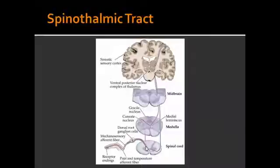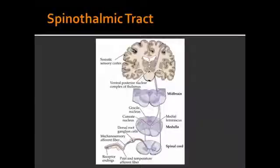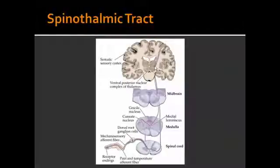Then the neurons decussate at the anterior white commissure, switching sides and ascending contralaterally. This is the second order neuron — everything after the first synapse. Then it has its second synapse at the VPL, which stands for the ventral posterior lateral nucleus of the thalamus. From there it makes its way to the sensory cortex, and this is the third order neuron. This is basically the anatomy of the spinothalamic tract.